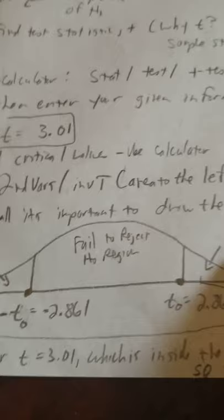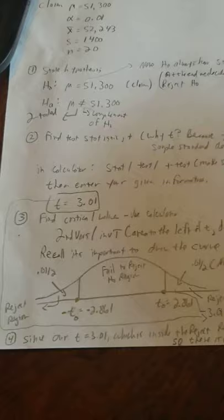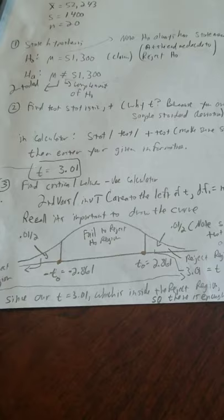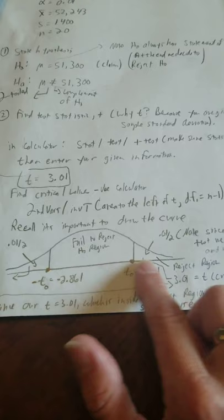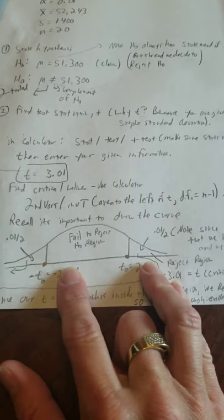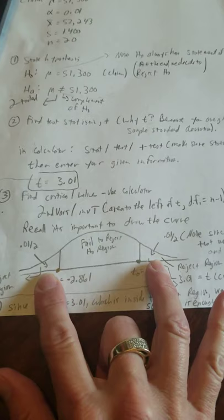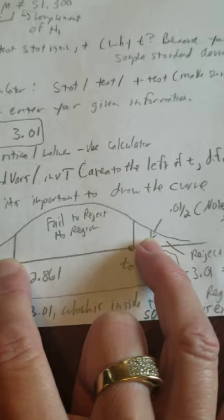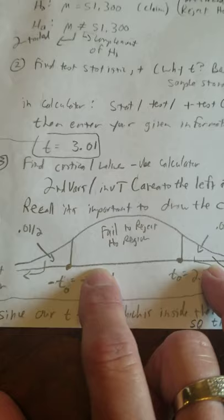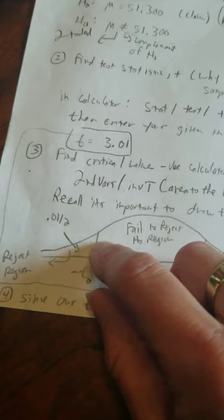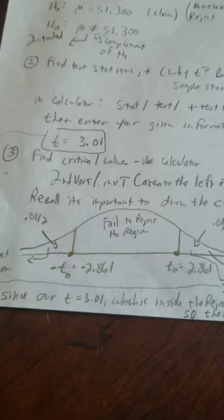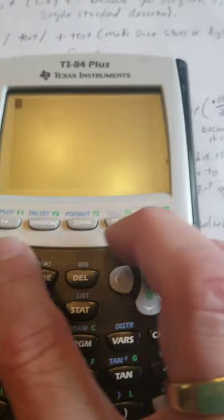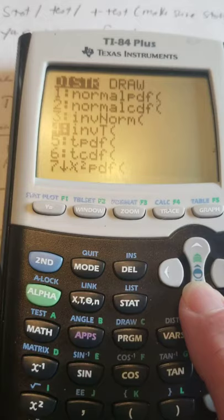Now, we were asked to do the critical value method, which means we need to find, using alpha, we need to find our critical values. They define our region of rejection. Then, we need to find out if this number falls in a region of rejection. So, I already have my picture drawn. Right now, we don't know those numbers, but we know there's going to be two critical values because it's a two-tailed test. We know between them is the fail-to-reject, and beyond them is the reject region. So, alpha was 0.01, very small. I need to divide it by two. 0.01 divided by two is the area inside there and the area inside here. So, I need to find these critical values.